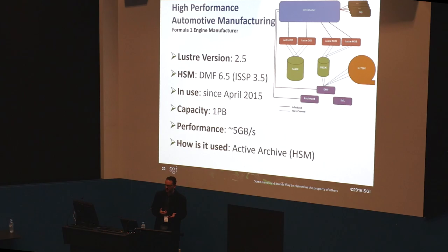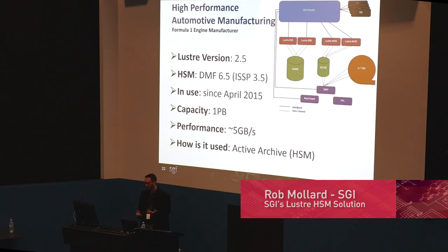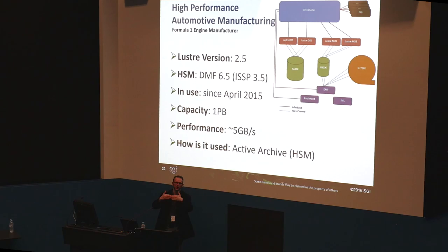Second, a high-performance automotive manufacturer — a Formula One engine manufacturer that we can't mention because Formula One customers effectively require payment for any mention, as they are a marketing engine. They're running Lustre 2.5 and DMF 6.5, in production since 2015, with one petabyte capacity and 5 GB/s. It's set up as an active archive with a reasonably small front-end cluster file system, actively moving data between tiers.